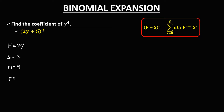To find r, since we're looking for the coefficient of y to the power 4, and y belongs to the first term, from this formula the exponent of the first term is n minus r. So therefore, n minus r equals 4. Since n is equal to 9, so 9 minus r equals 4, therefore r is 5, because 9 minus 5 equals 4.